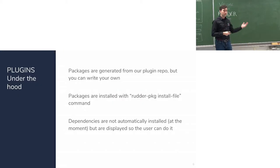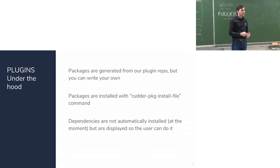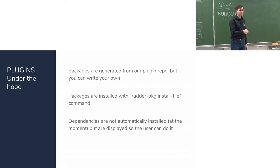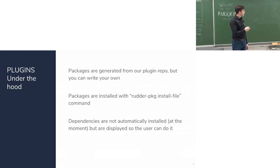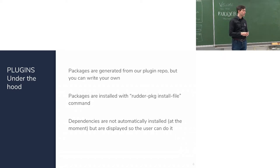Packages are generated directly from our source code and can be installed with a single command that comes with Rudder. You still have to download the plugin manually — we haven't written a real package manager yet. Dependencies are not yet managed automatically; we print them during installation. Since Rudder is built for this, we now have what we need, so in the next version we will probably make dependency installation automatic.